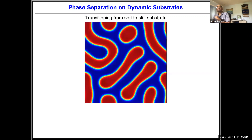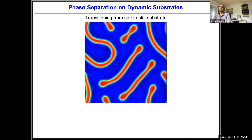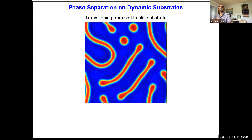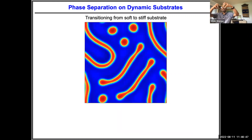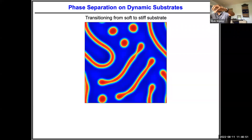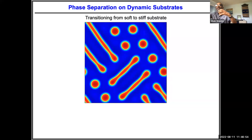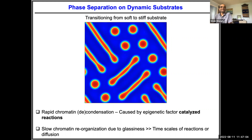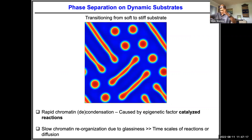In the simulation, starting from a condensed phase and changing the acetylation level, on fast timescales there is decondensation. Through diffusion fields, these domains interact, and then there's a lot of rearrangement. The system can evolve further on timescales much larger than the reaction or diffusion timescales. This has to do with glassiness — when given a configuration, there are many ways to arrange it, so the system can get stuck in certain states and then move.